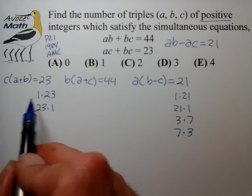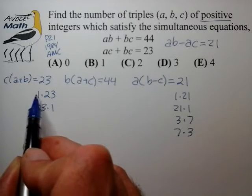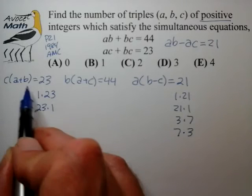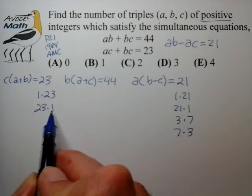And we notice that there's only two ways that we can line up these factors. Either c equals 1 and a plus b equals 23, or the reverse: c equals 23 and a plus b equals 1.